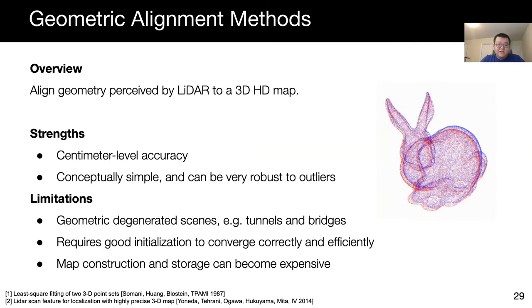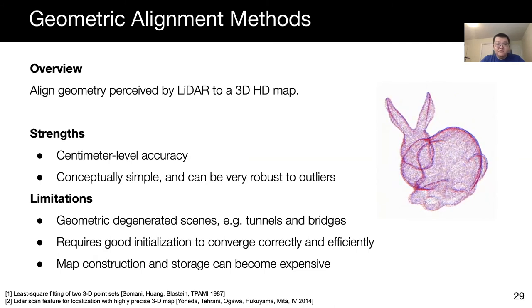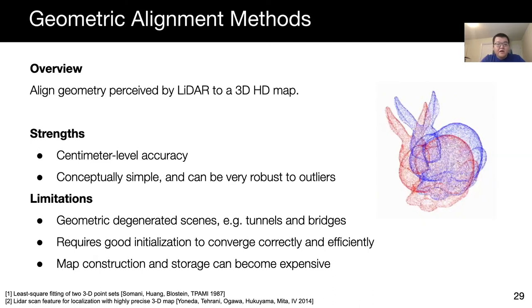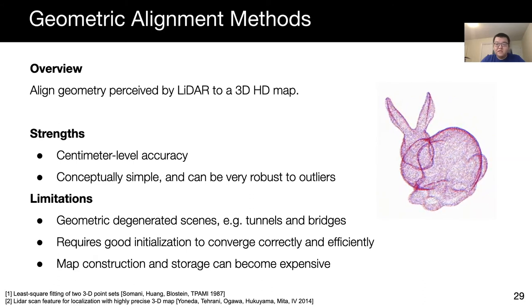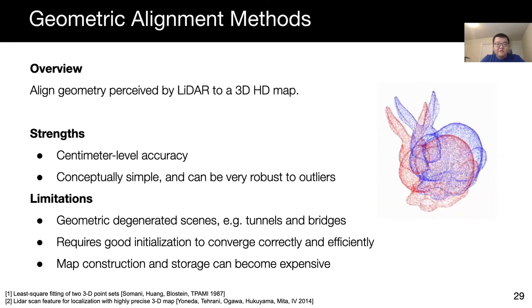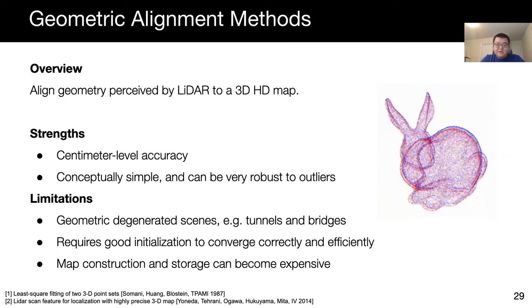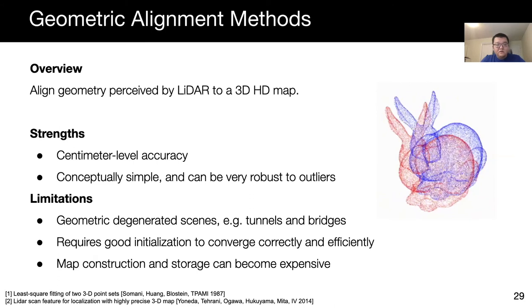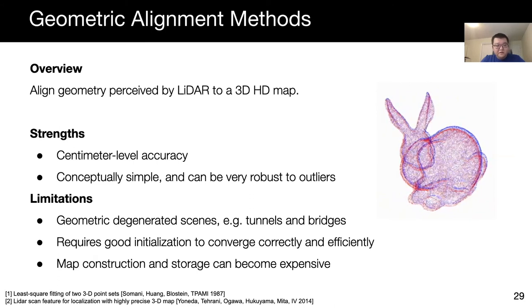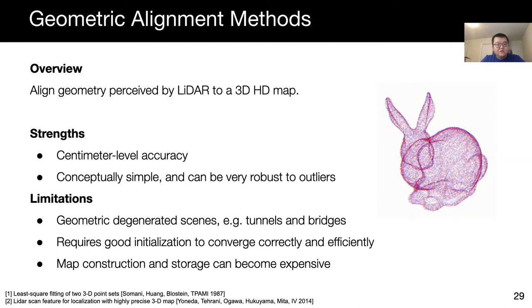Geometric alignment methods rely on aligning LiDAR point clouds to pre-built 3D HD maps. These methods can be very accurate, relying on well-established, conceptually simple methods that can be robust to outliers, such as iterative closest point algorithms. The downside is that these methods have difficulties in geometrically degenerate cases, such as tunnels and bridges, where you keep seeing the same geometric structures. Further, they usually require a good initialization for convergence. In addition, storing and building 3D geometric maps can be challenging and expensive.